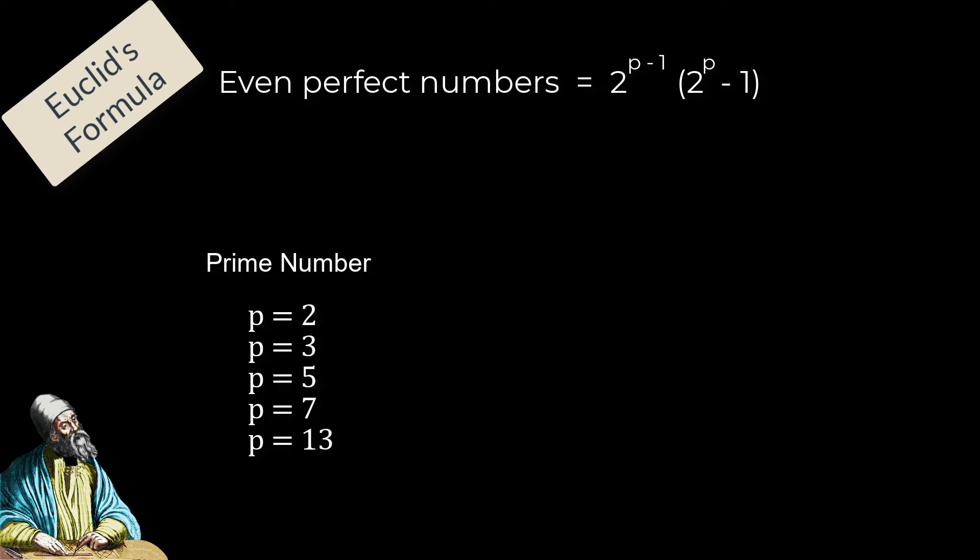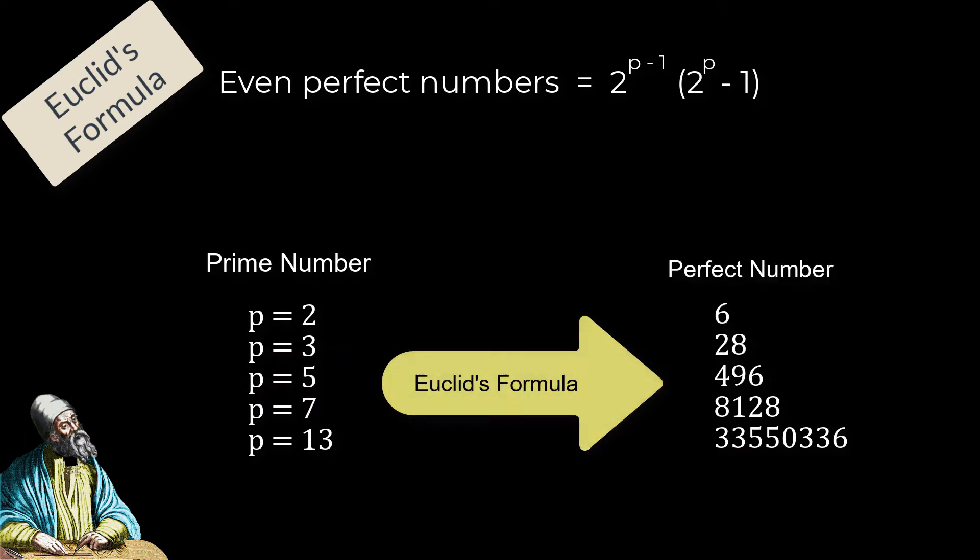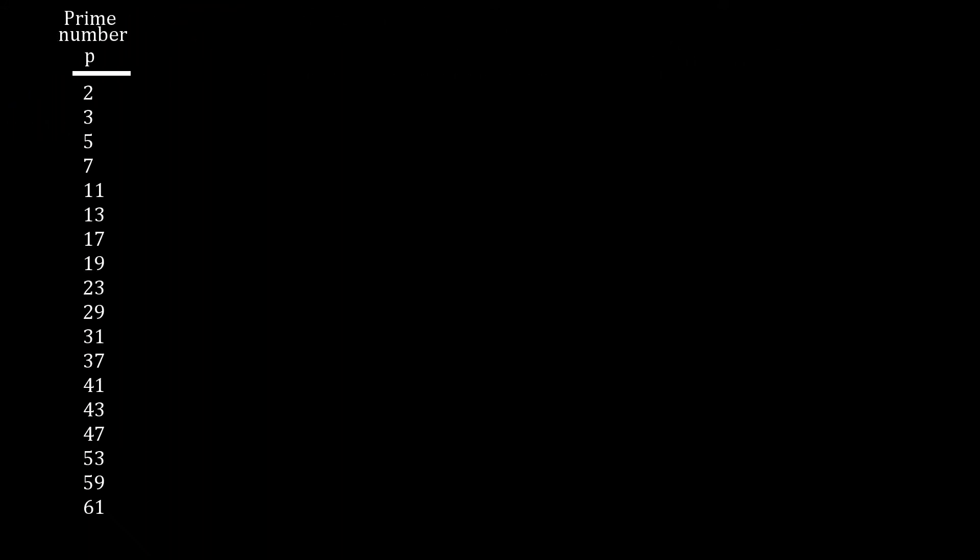If we put other primes into it, we get more perfects. Notice that 11 isn't one of the primes that generates a perfect number. So, how do we figure out which prime numbers generate perfect numbers?